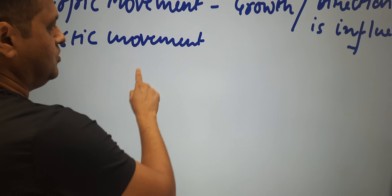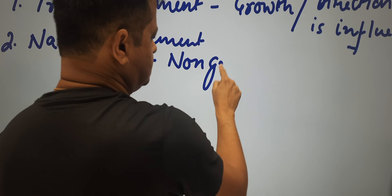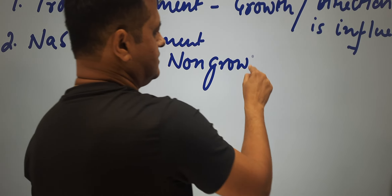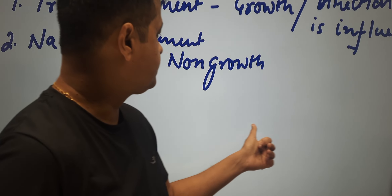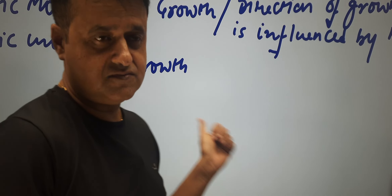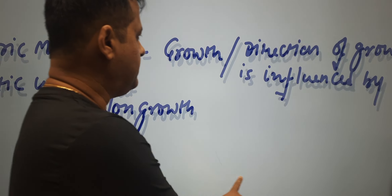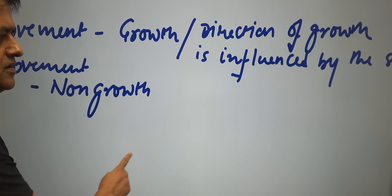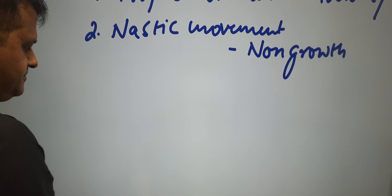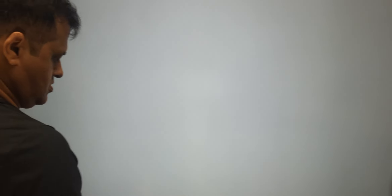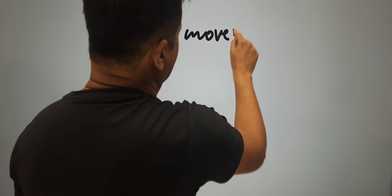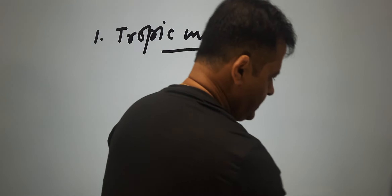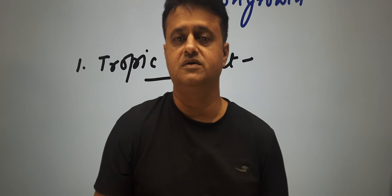Nastic movements, on the other hand, are non-growth movements. They are sometimes like reflexive movements, but the plant is not actually growing. For tropic movements, or growth-oriented movements, they are directed towards a particular direction according to the position of the stimulus.